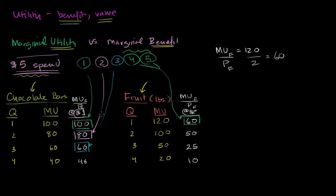So let's now assume that our chocolate bars are $2. We're going to calculate the marginal utility per dollar — this column was for when it was $1 per bar, this is now when it's $2 per bar. For that first bar, I'm still getting 100 points of marginal utility, but now it's $2, so 100 divided by 2 gives me 50 marginal utility points per dollar. For the next bar, I get 80 marginal utility points, so 80 divided by 2 is 40 points per dollar. Then the third bar is 30 points per dollar, and the fourth bar is 20 points per dollar.